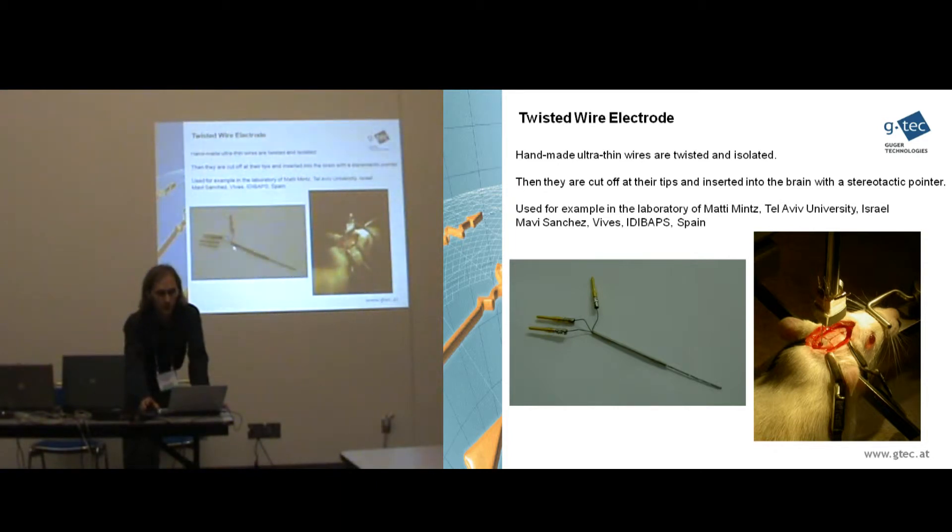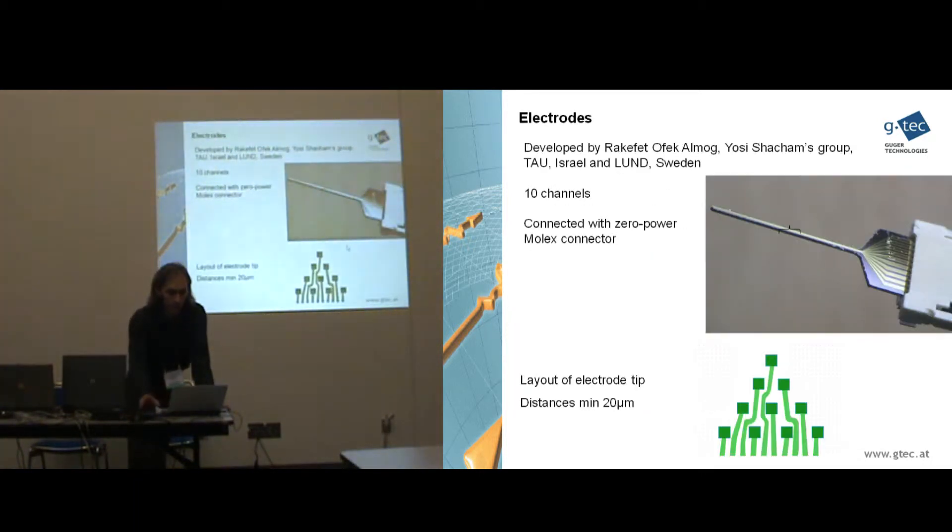On this picture you see a stainless steel tube with the microwires inside. So basically you take these microwires, you twist them, the microwires are isolated and you just cut the tip of the microwires to have open ends of your wires. And these wires are inserted into the brain. Here you see a stereotactic pointer for positioning the wires. So first of course you have to drill a hole and afterwards you can insert the microwires.